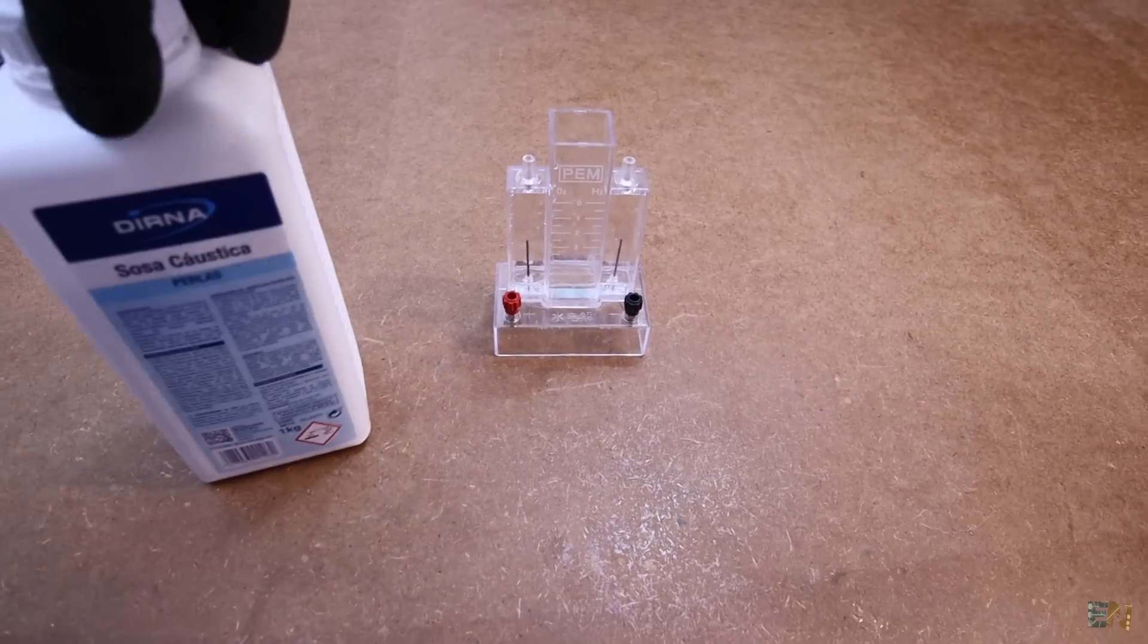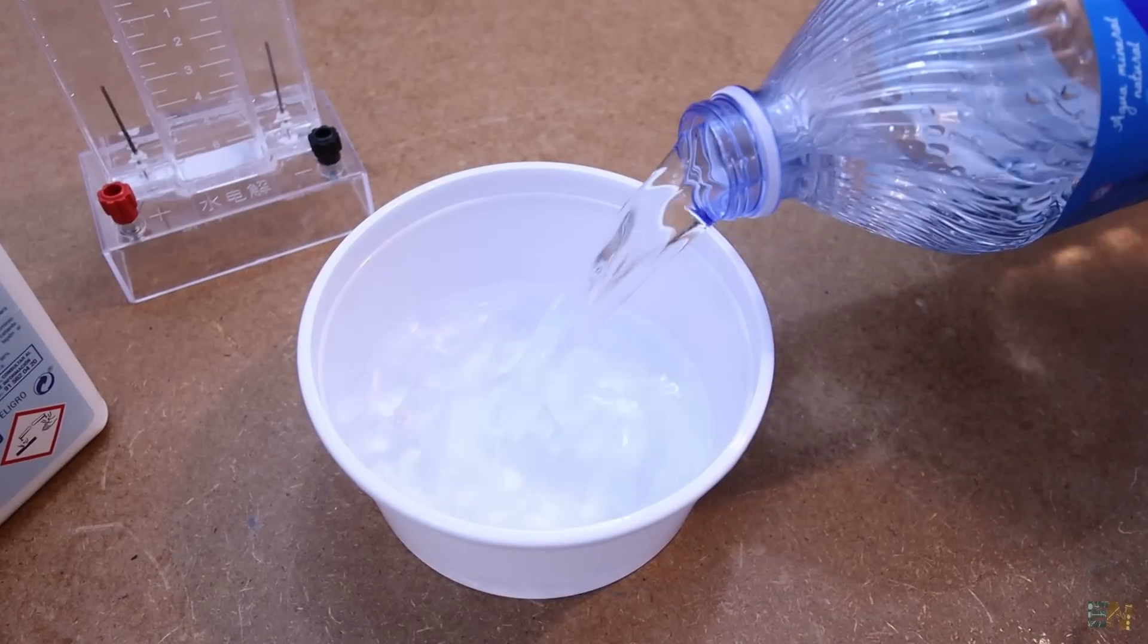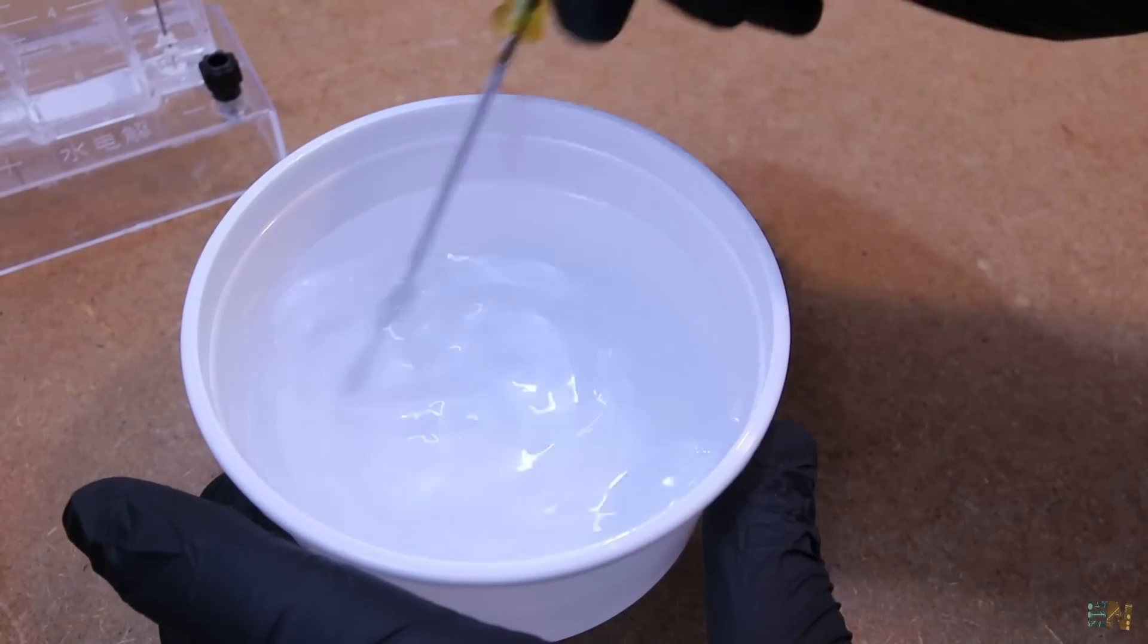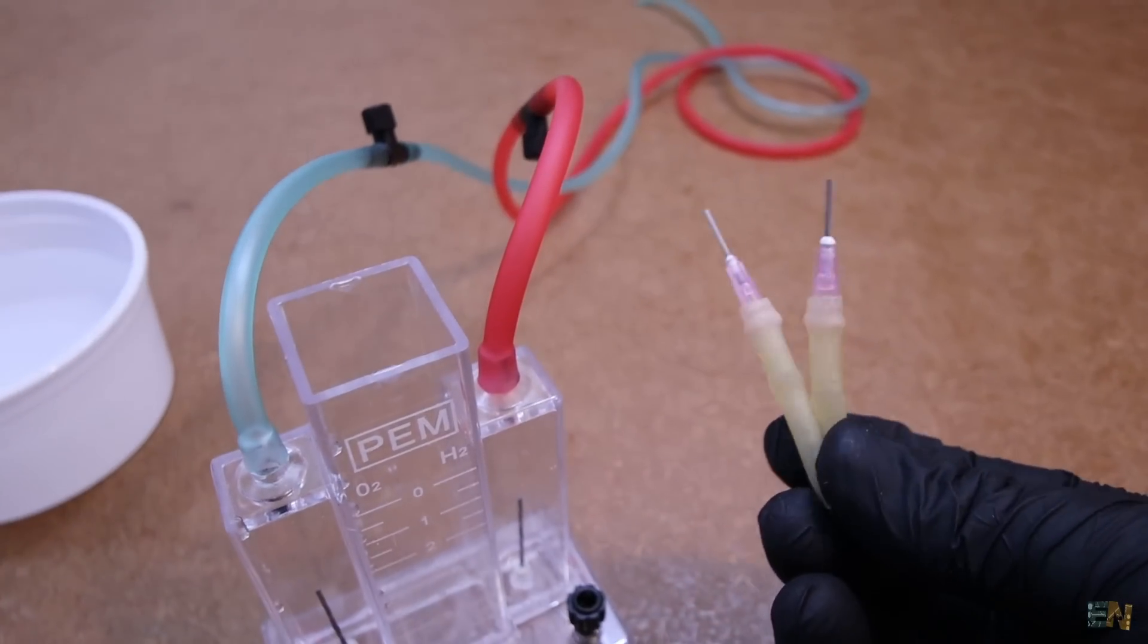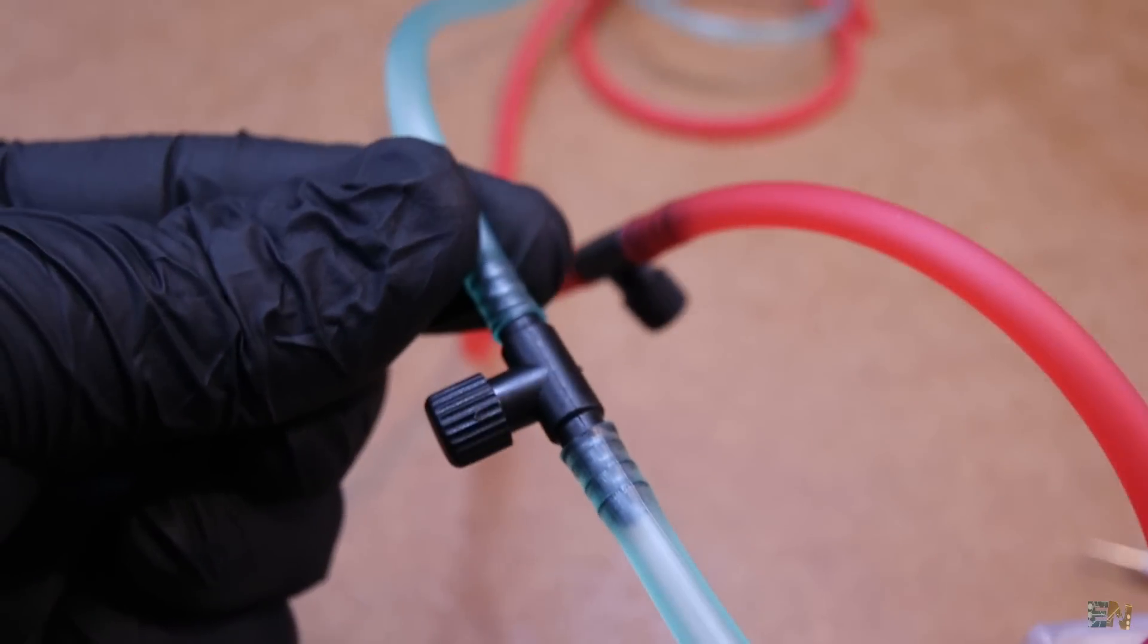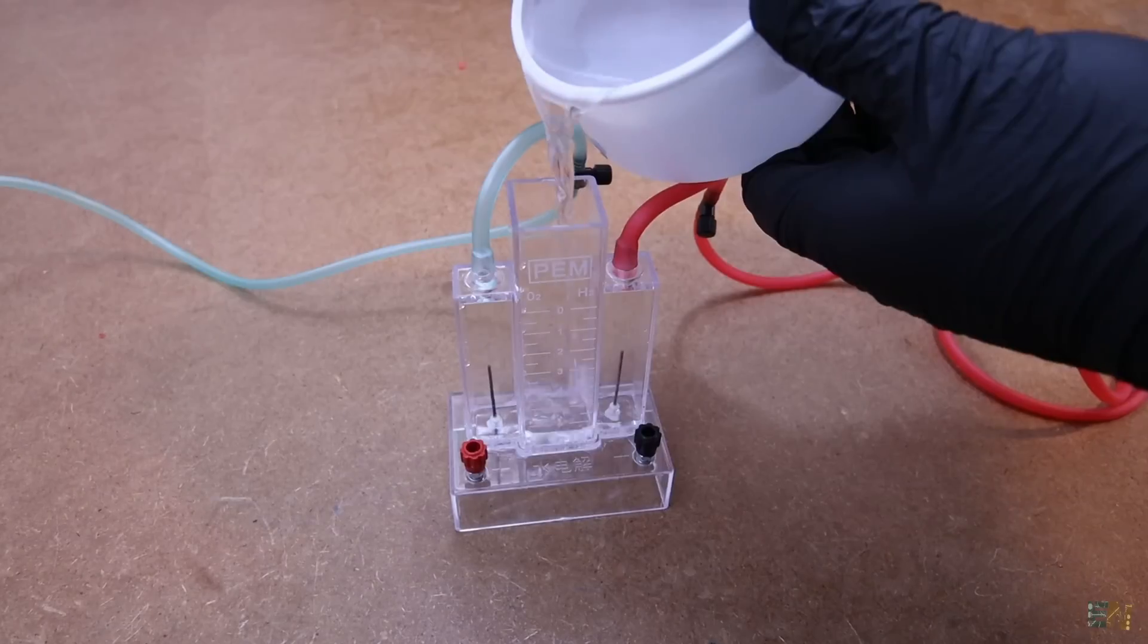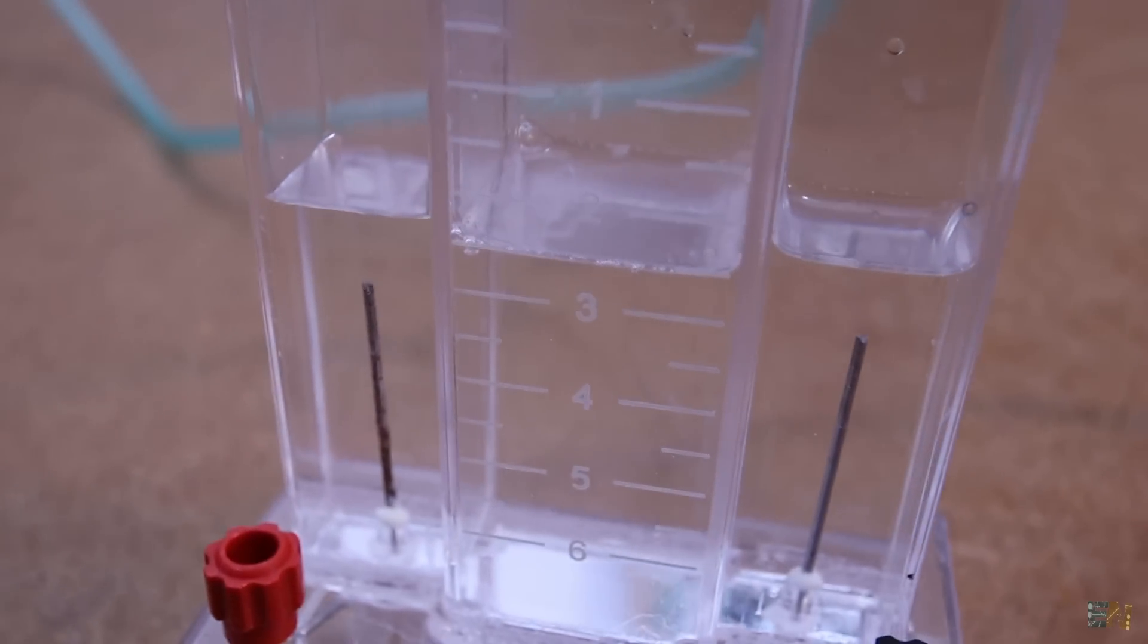So let's make the entire process. In a plastic container, I mix the water with some sodium hydroxide. So mix it well. I also changed the rubber tubes with some longer ones and also added these plastic valves. I then add that water mixture to the electrolysis device.